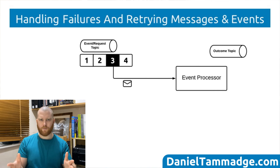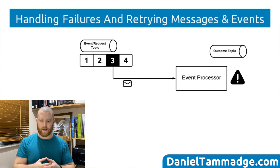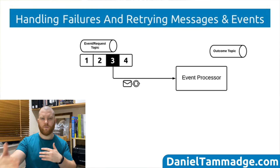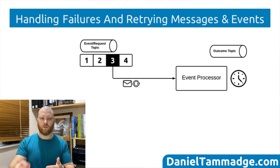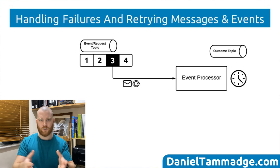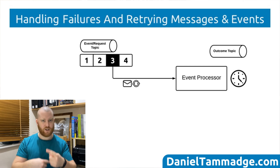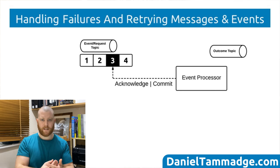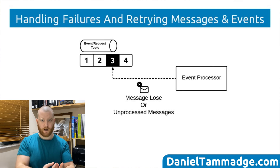So what happens if the event processor starts consuming the third message and it encounters an issue? You could just keep retrying that message. If you're using something like Apache Kafka, you can't move on to the next message until you've committed the consumer offset. So you're just going to keep processing that same message over and over again, unless you do something with it. But if you just commit the offset of the consumer, you're going to lose that message.